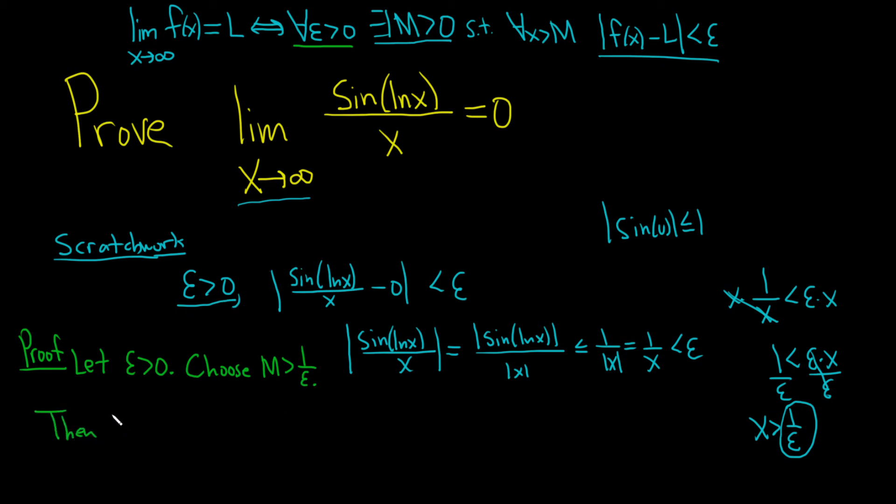Then, for all x bigger than m, right, we're satisfying this definition up here. Let's look at the difference between f of x and L. So the sine of the natural log of x all divided by x minus 0. What is this mystical quantity? This is the absolute value of the sine, we're basically repeating our steps, natural log of x over x. This is equal to the absolute value of the sine of the natural log of x over the absolute value of x. This is less than or equal to 1 over the absolute value of x.